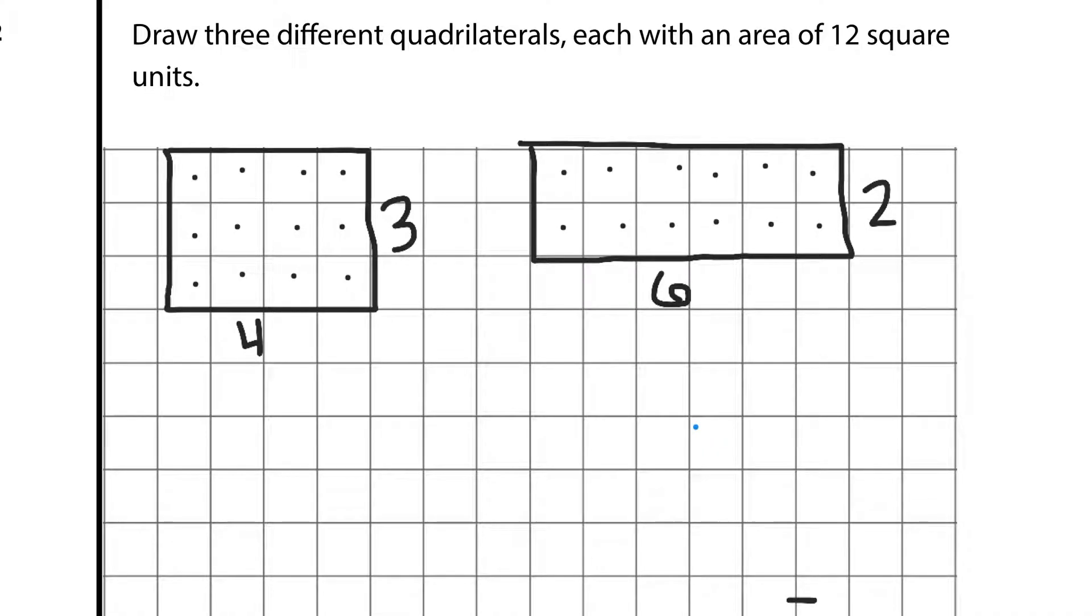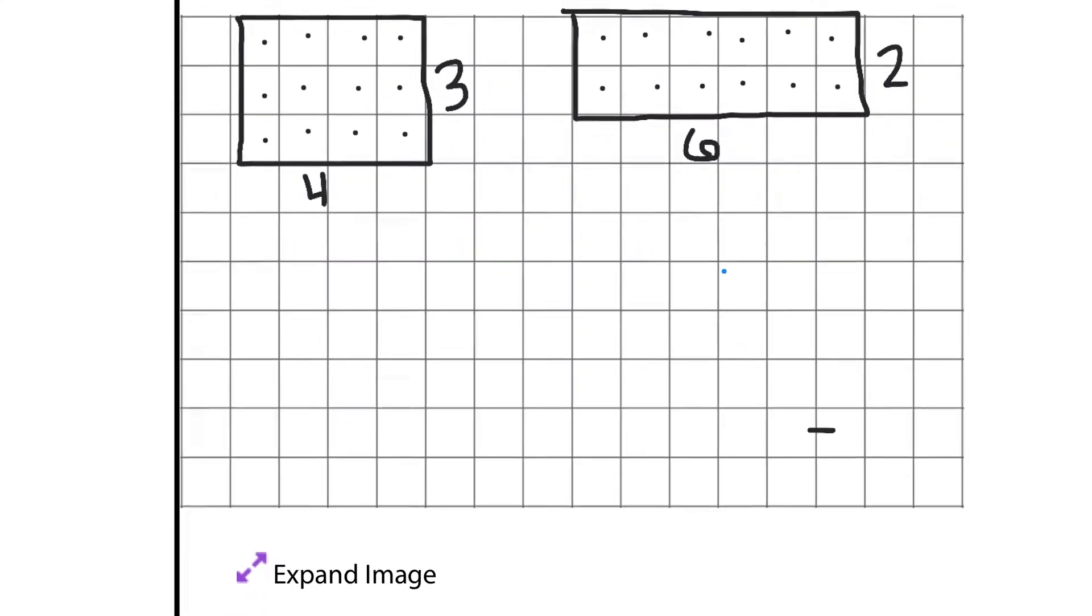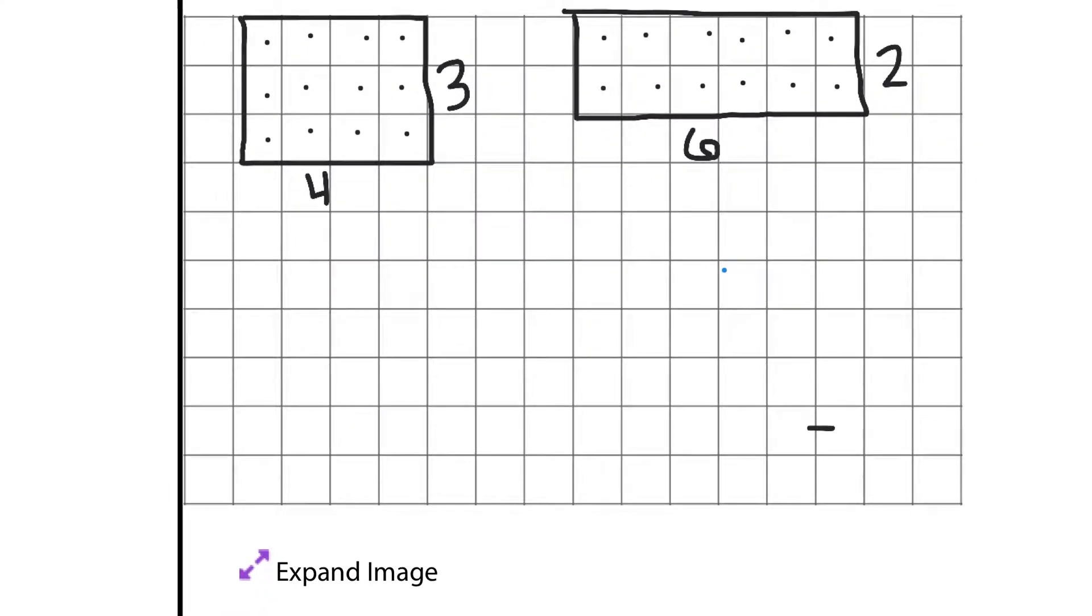So, that's a second quadrilateral that has an area of 12 square units. Now, if we get creative with the last one here, we can come 1 down and how about 12 across? And so, we will end up with a 12 by 1 rectangle, which is a quadrilateral. And if we count up the squares on the inside, we get 12 square units.